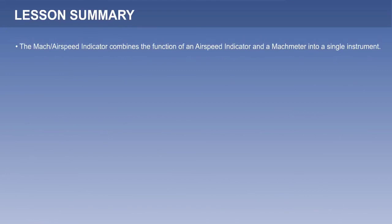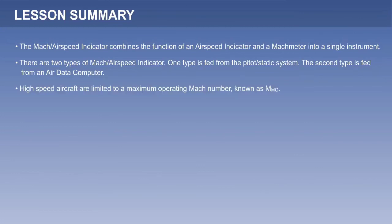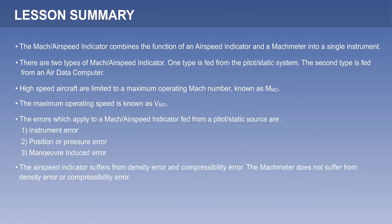The Mach airspeed indicator combines the function of an airspeed indicator and a Mach meter into a single instrument. There are two types: one fed from the pitot-static system, and the second fed from an air data computer. High-speed aircraft are limited to a maximum operating Mach number, known as MMO. The maximum operating speed is known as VMO. The errors which apply to a Mach airspeed indicator fed from a pitot-static source are: instrument error, position or pressure error, and maneuver-induced error. The airspeed indicator also suffers from density error and compressibility error.